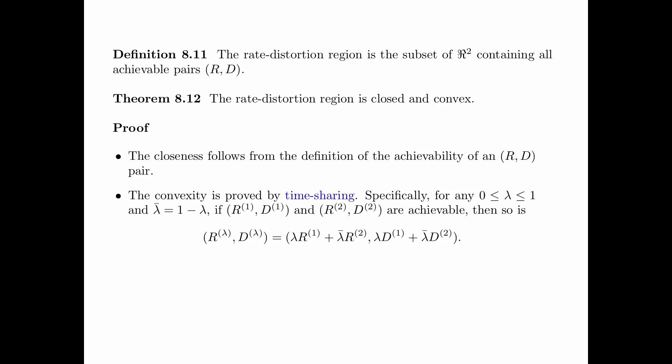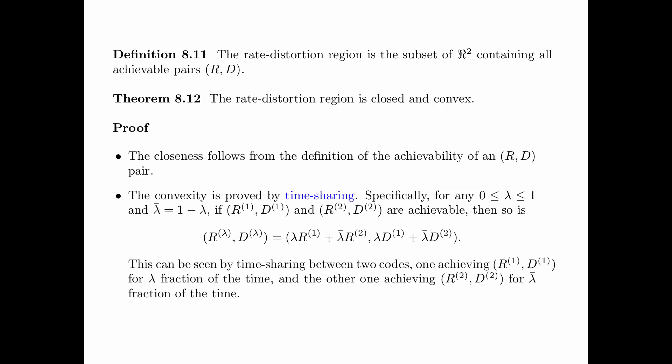Specifically, for any mixing coefficient lambda between 0 and 1, we let lambda-bar equal 1 minus lambda. If the pairs (R1, D1) and (R2, D2) are achievable, then so is the pair (R_lambda, D_lambda) which equals (lambda*R1 + lambda-bar*R2, lambda*D1 + lambda-bar*D2). This can be seen by time sharing between two codes: one achieving (R1, D1) for a lambda fraction of the time, and the other achieving (R2, D2) for a lambda-bar fraction of the time. Formally, we need to fix the epsilons and deltas, and the details are given in the textbook.